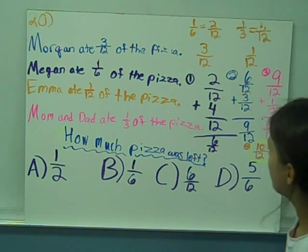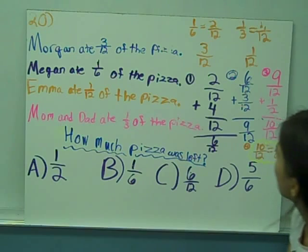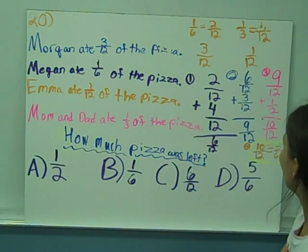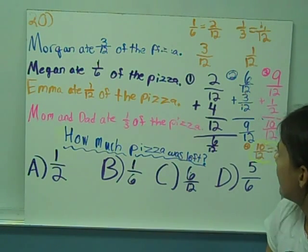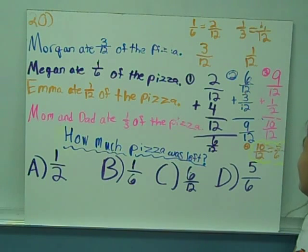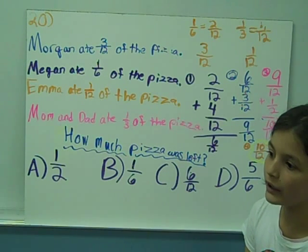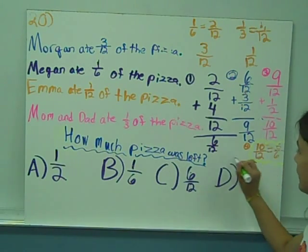So the first step is you add 2 twelfths and 4 twelfths. Wait, no, never mind. 1 third equals 4 twelfths. And that equals 6 twelfths. 6 twelfths plus 3 twelfths equals 9 twelfths. Then 9 twelfths plus 1 twelfth equals 10 twelfths. So, 10 twelfths, if you make it smaller, it equals 5 sixths, which is D.